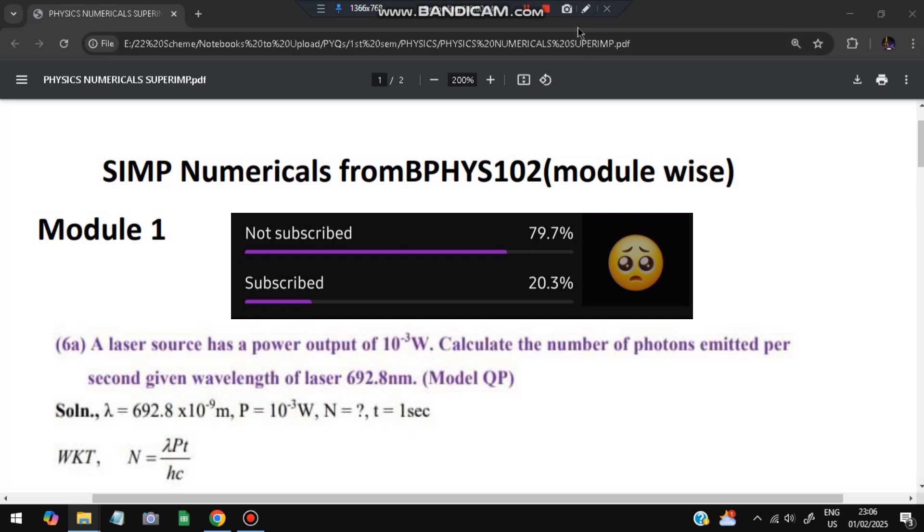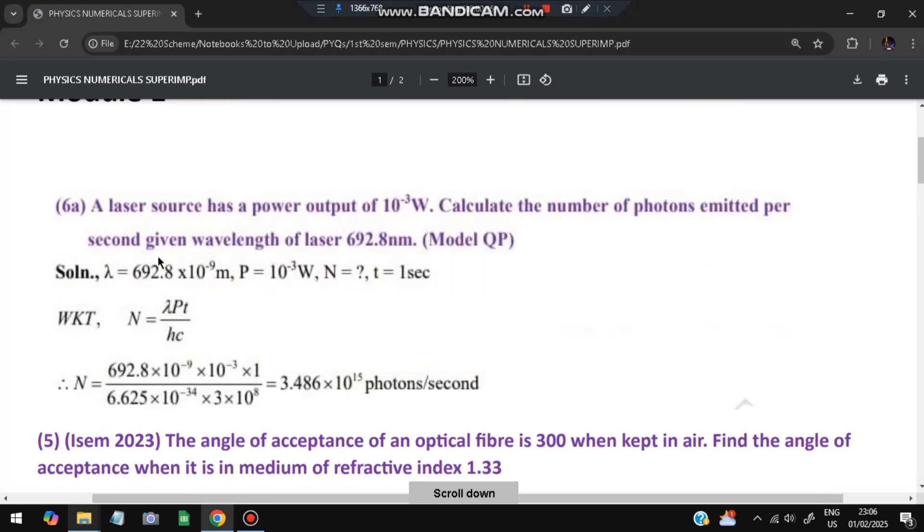So without wasting more time, let's get started. The first question is that a laser source has power output of 10^-3 watts. Power is given, and we need to calculate the number of photons emitted per second. The given wavelength of the laser is 692.8 nanometers.